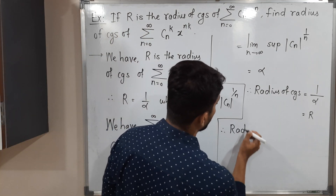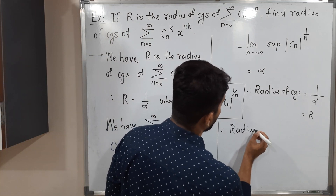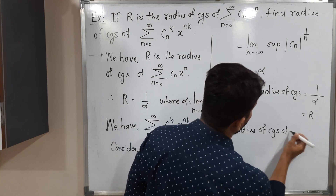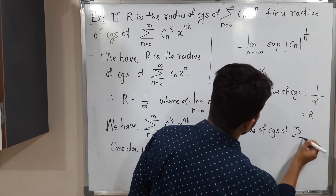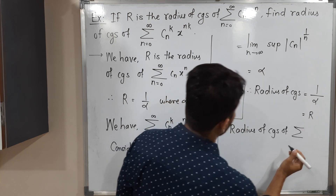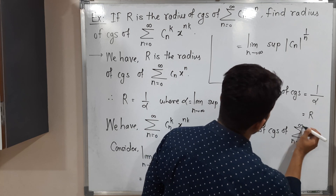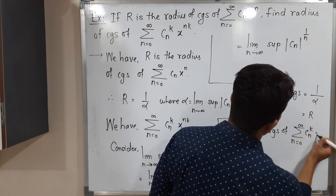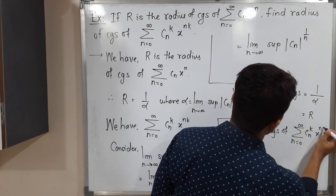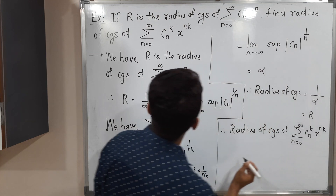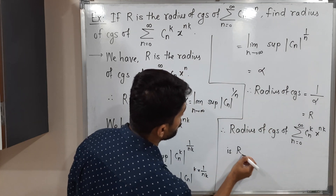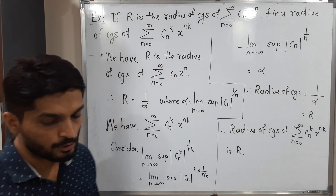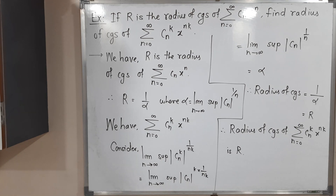Therefore, the radius of convergence of the series summation n running from 0 to infinity, cₙ raised to k, x raised to nk, is also capital R. Make a screenshot of it, then we will go to the next problem.